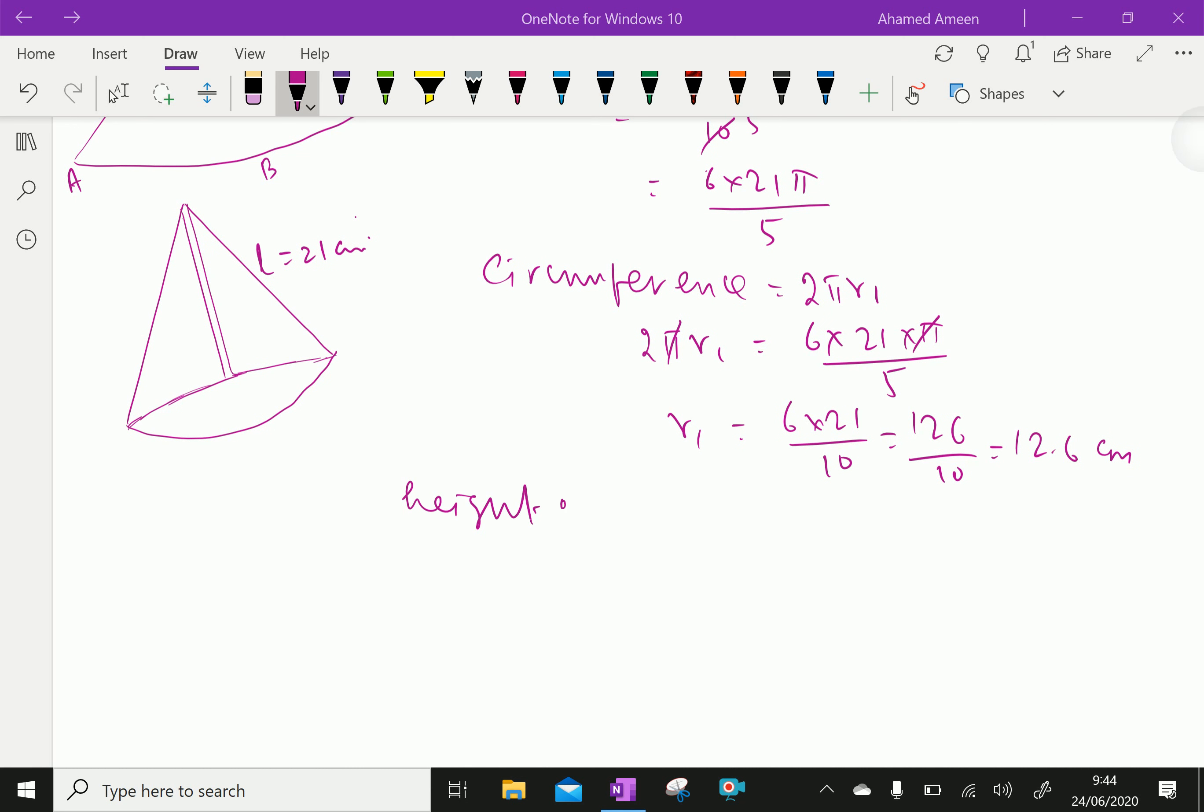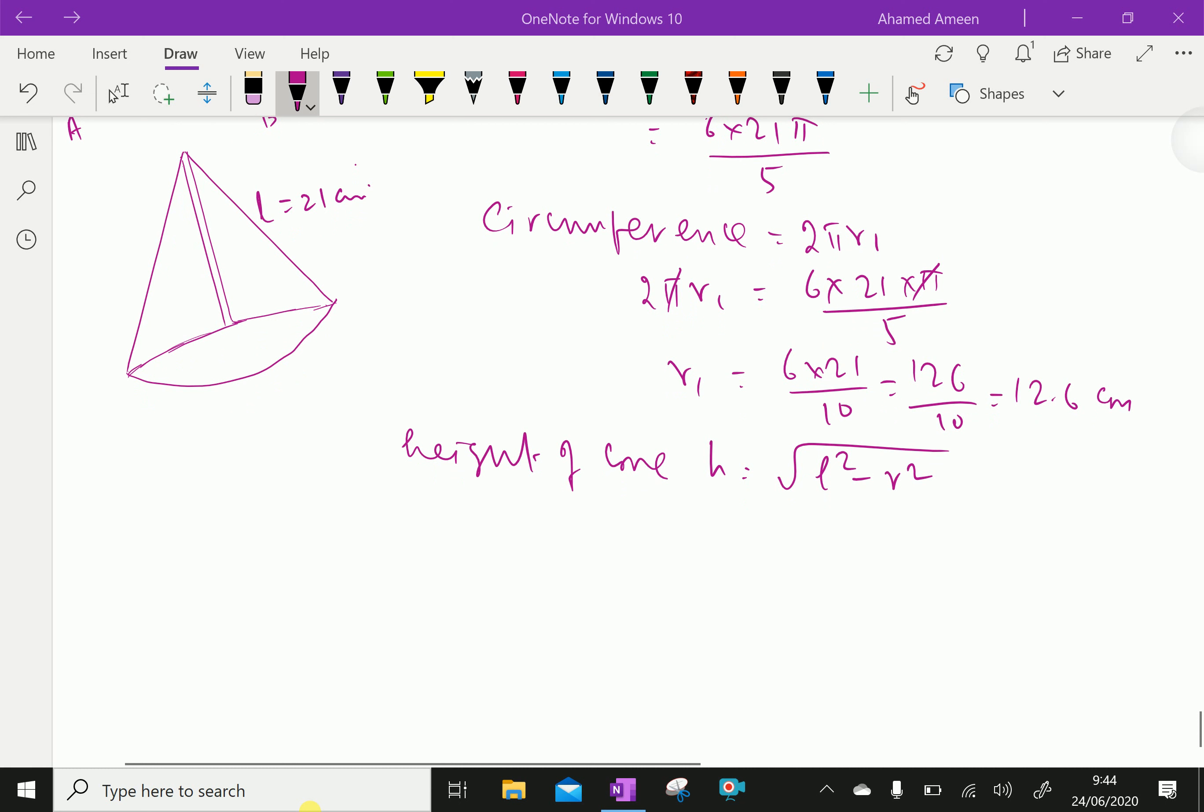Height of the cone, h equal square root of L squared minus R squared. Therefore, h equal square root of L is 21 square minus R squared, that is 12.6 square.